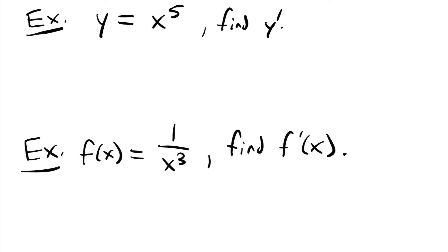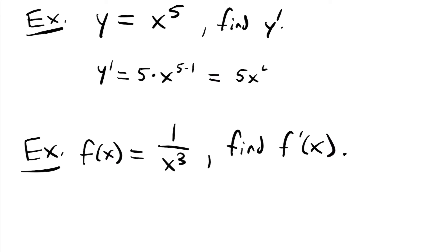Now let's look at this example. We have the function y equals x to the fifth power, and we want to find y prime, which is the derivative of y. We're going to look at different notations for derivatives. Using the power rule, we take that exponent 5, multiply it by x, and subtract 1 from the exponent: 5 minus 1. So y prime equals 5x to the fourth power.